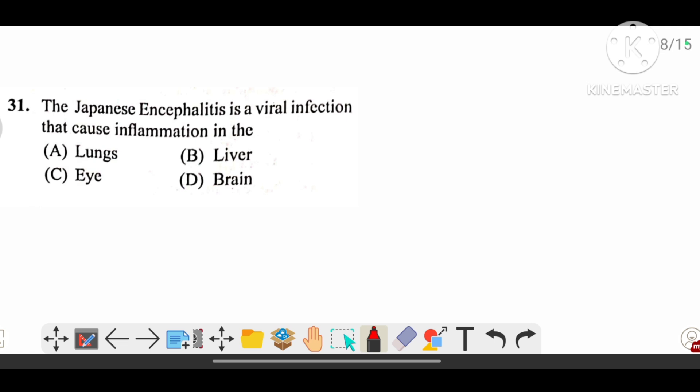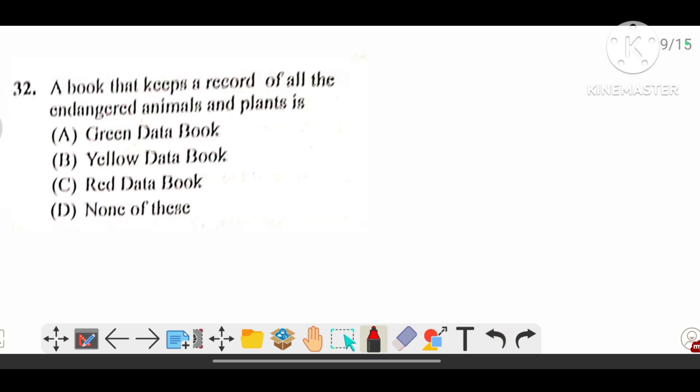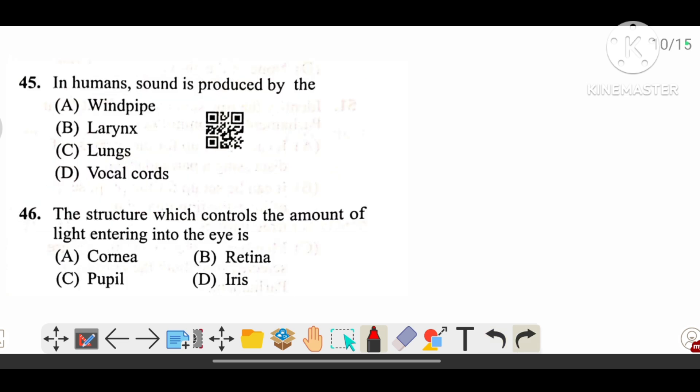Japanese encephalitis is a viral infection that causes inflammation in the brain. A book that keeps a record of all the endangered animals and plants is the red data book.